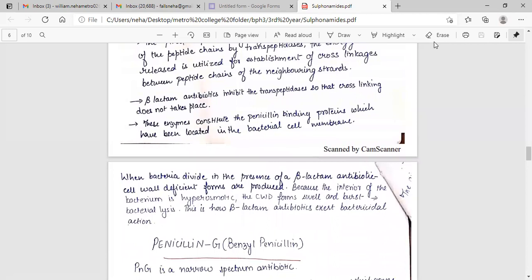When bacteria divide in the presence of beta-lactam antibiotic, cell wall deficient forms are produced. Because the interior of the bacterium is hyper-osmotic, the CWD forms swell and burst. Bacterial lysis. This is how beta-lactam antibiotic exerts bactericidal action.